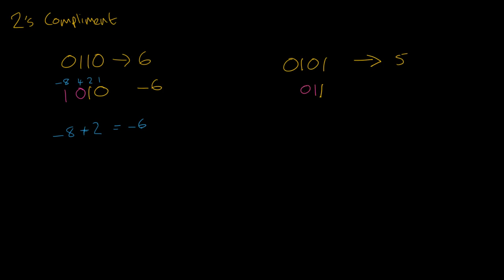And then we invert all the other numbers. So that becomes a 1, that becomes a 0, that becomes a 1. Let's write our numbers above 1, 2, 4, and minus 8. Minus 8 plus 2 plus 1 is equal to minus 5. And that's how it works.